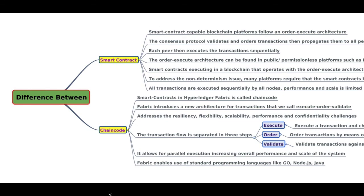So this is the main difference between a smart contract, which is used in other blockchain platforms, and the chaincode which is specific to Hyperledger Fabric. That's all for this video. Thank you for staying with me — we'll be uploading a new video soon. Till then, sayonara.